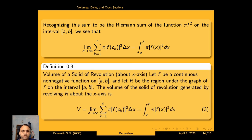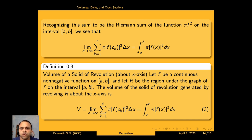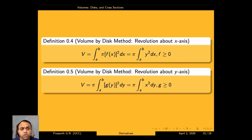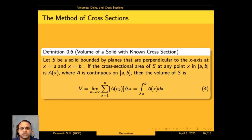For revolution about the x-axis: if f is a continuous non-negative function on [a, b] and R is the region under the graph of f, then the volume of the solid of revolution generated by revolving R about the x-axis is V = integral a to b pi [f(x)]² dx, or equivalently pi × integral a to b y² dx. If revolving about the y-axis, the volume is V = pi × integral c to d x² dy, where the region is under the graph expressed in terms of y.